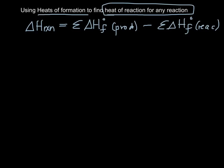Now, this equation looks a little daunting, but it's actually kind of simple. This just means sum of. So we take all the heats of formation of the products and add them together, and then we take all of the heats of formation of the reactants and we subtract them. And that allows us to find the heat of reaction of any reaction. So let's see what an example looks like.